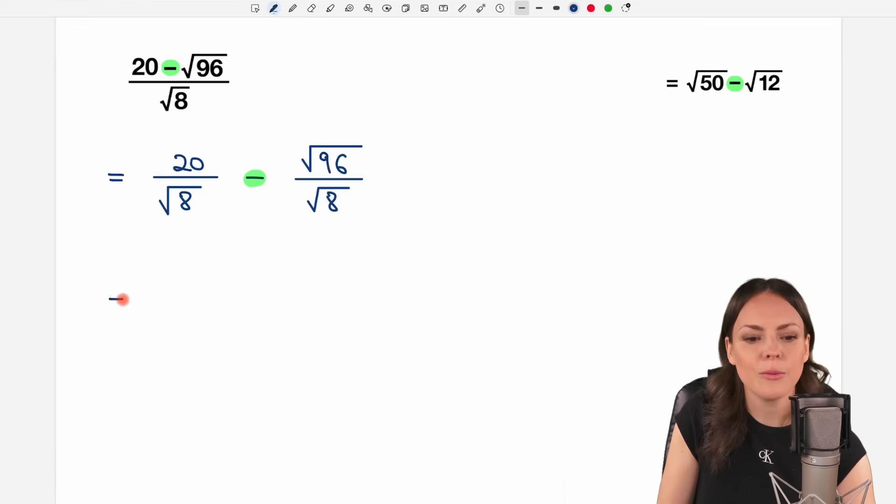So how can we get rid of these fractions now? Here we have a number divided by a square root, and here we have a square root divided by a square root, so this fraction here is easier, so maybe let's start with this,